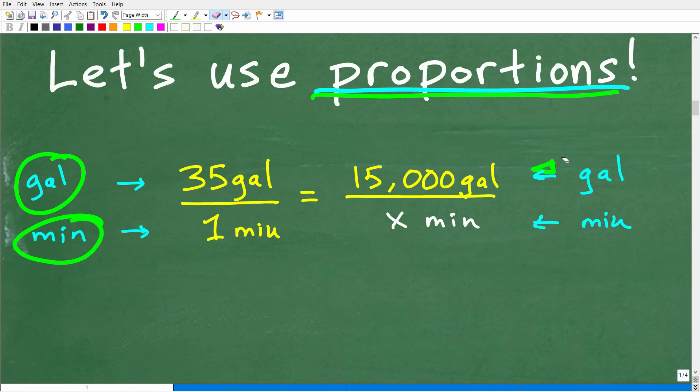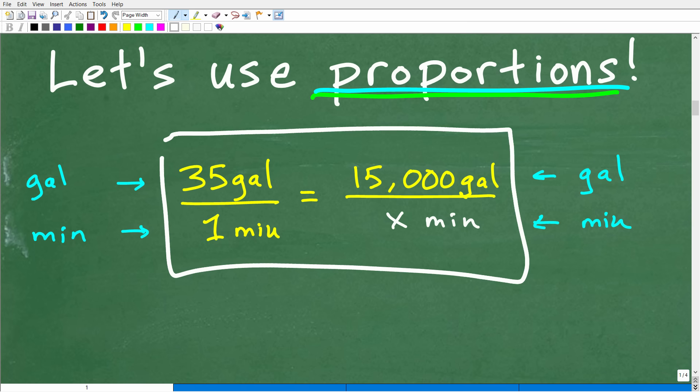We're going to put gallons in the same location in terms of the fraction. We're going to put it in the numerators, 15,000 gallons over X minutes. Okay. So this pump can move 15,000 gallons in how many minutes? Well, we don't know, but we do know it can move 35 gallons in one minute. So this time will be proportional. Okay. So hopefully this makes sense. And again, this is a very, very huge, big, important topic in math. Very, very common type of math word problems or proportion rates and ratio type of problems. Okay. So hopefully this makes sense. So now what we're going to do is use the cross product to solve for X.